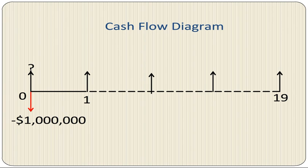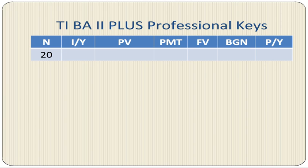Here is the cash flow diagram. We are interested in calculating the cash flow at t equals 0. Here are the calculator keys for the TVM function. We set N equals 20 for 20 years life expectancy.